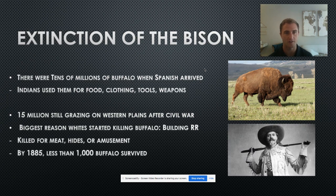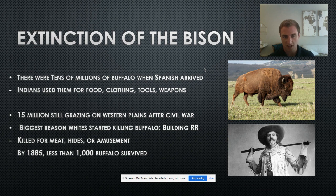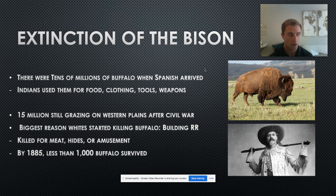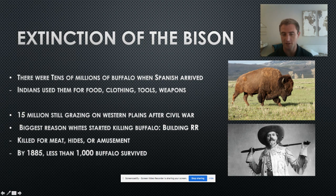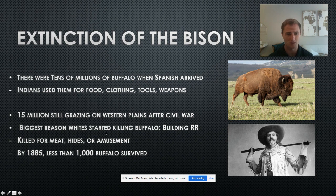The extinction of the bison is closely tied to this era. Tens of millions of buffalo were on the Great Plains when the Spanish arrived. Plains Indians used the buffalo for everything — food, clothing, tools, weapons. Fifteen million were still there after the Civil War. But building railroads became the biggest reason for their extinction, because large buffalo herds were on land proposed for railroads. Railroad companies hired buffalo hunters to kill them mercilessly — that's where we get Buffalo Bill Cody, who killed 4,000 buffalo himself working for the Kansas Railroad Company. They were killed for railroads, for their hides, or just for amusement. By 1885, fewer than a thousand survived.